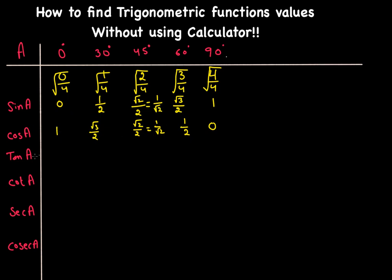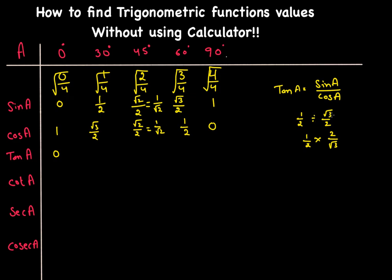For tangent, remember that tan(angle) = sine / cosine. So we divide each sine value by the corresponding cosine value. tan(0°) = 0/1 = 0. For tan(30°): (1/2) divided by (√3/2) equals (1/2) × (2/√3), and canceling gives 1/√3.